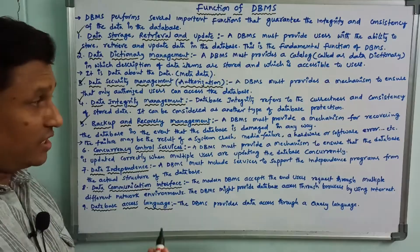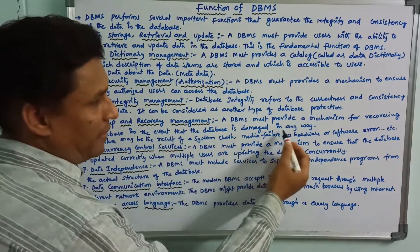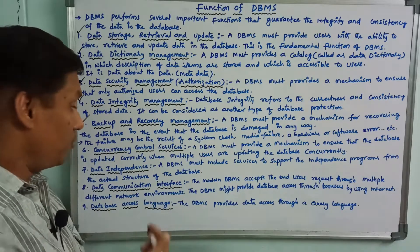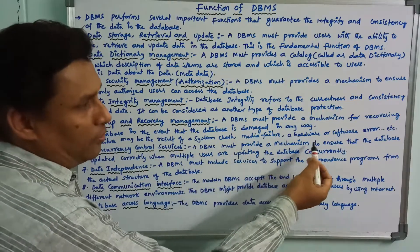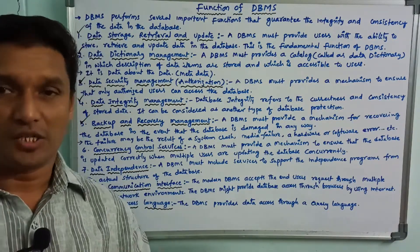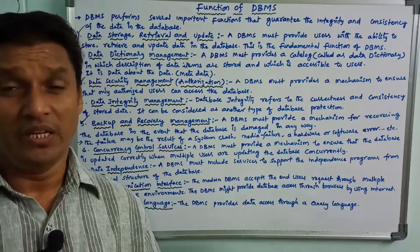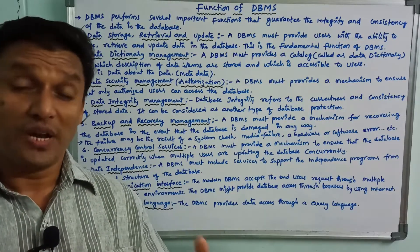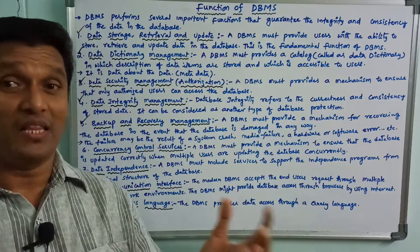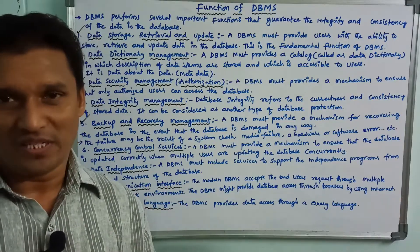Next is backup and recovery management. DBMS must provide a mechanism for recovering the database in the event that the database is damaged. What is the problem? What is the failure? The failure may be the result of a system crash, media failure, hardware and software errors — for example, an operating system problem, hardware problem, software problem, media failure or network failure. If there are problems, the database may be at risk. In this situation, the database will recover using the backup recovery process.